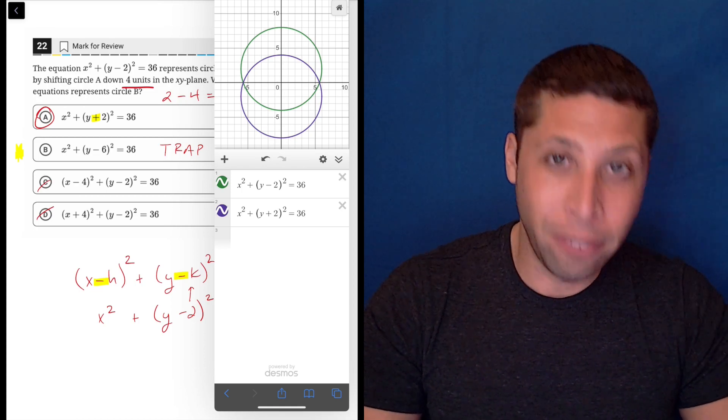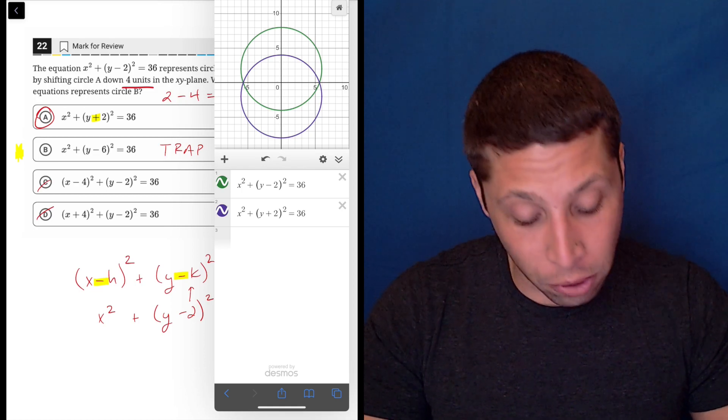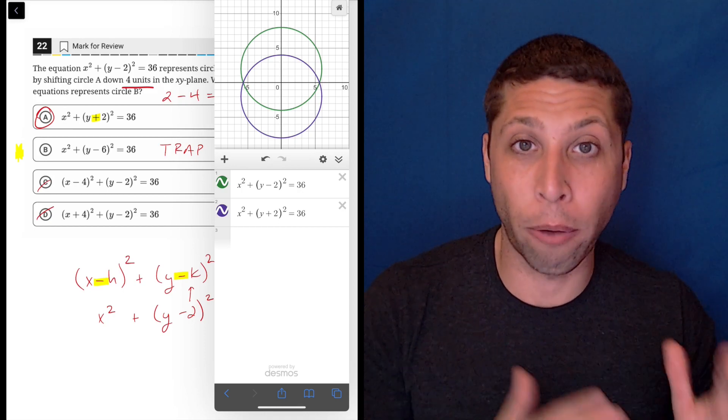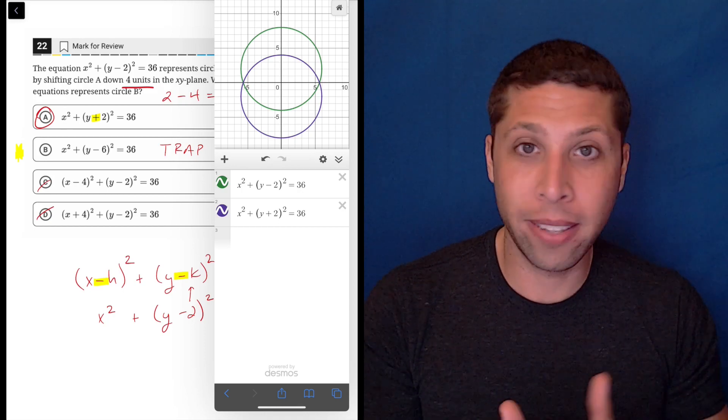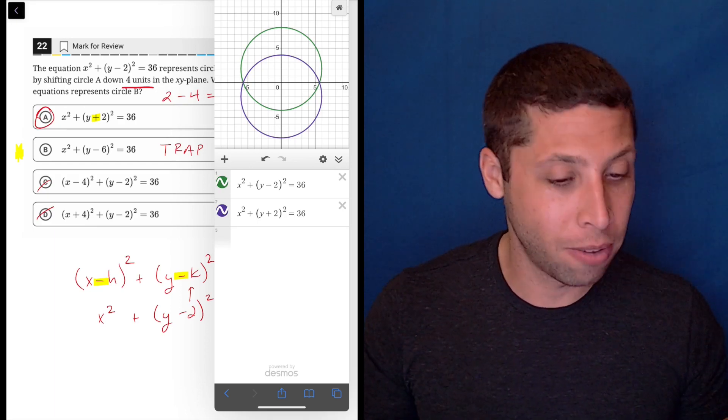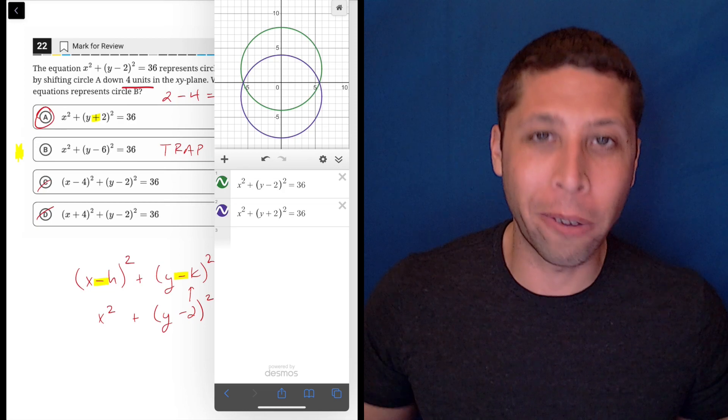It's still nice and visual and kind of foolproof. So as long as you enter everything right, you should be good. So if you wanted to go this route from the start and just graph these things because maybe you're not certain about the circle formula or you just don't trust yourself, I'm all for it.